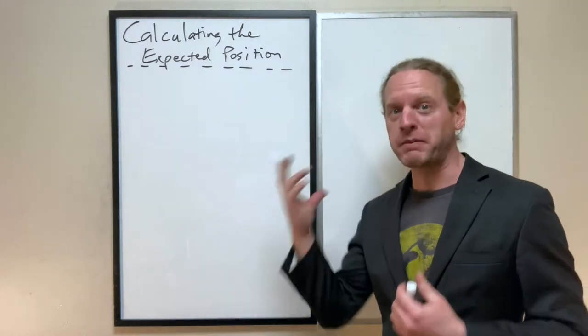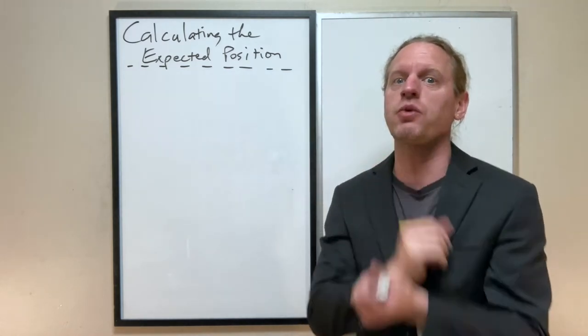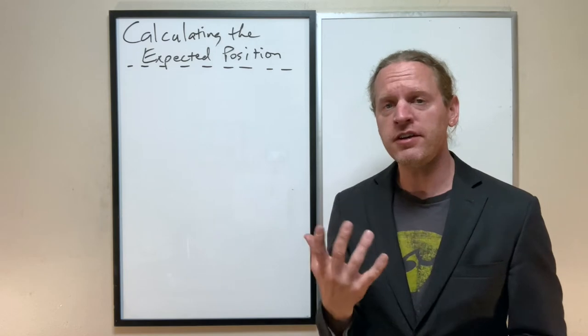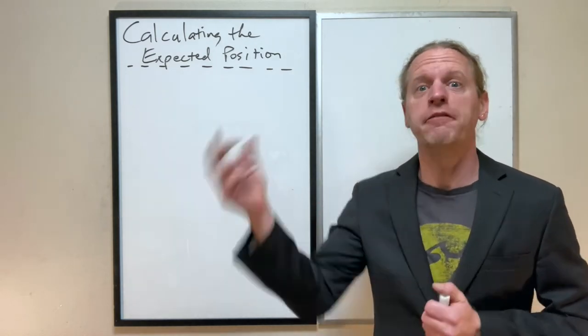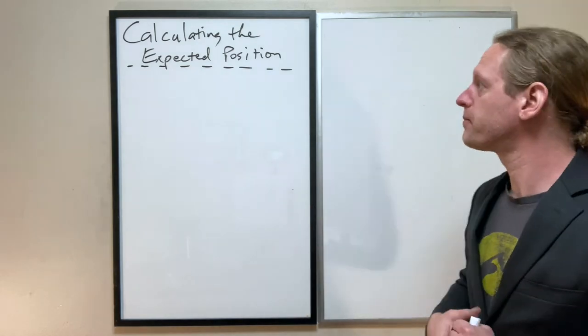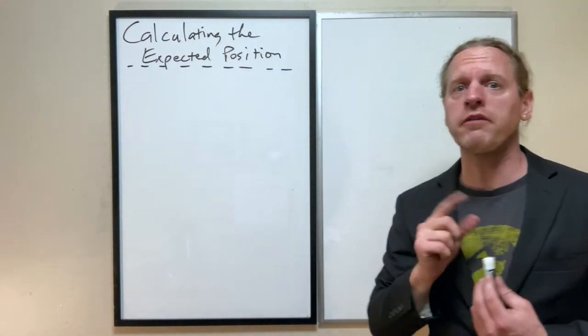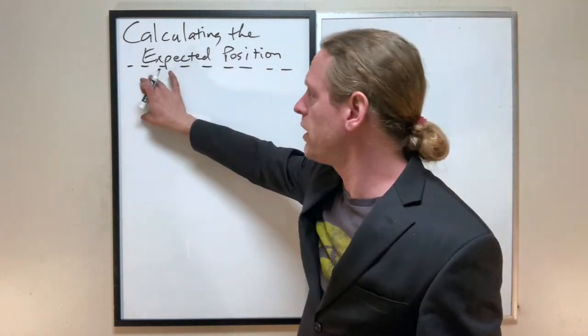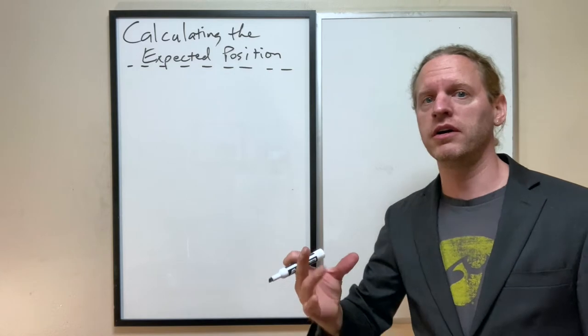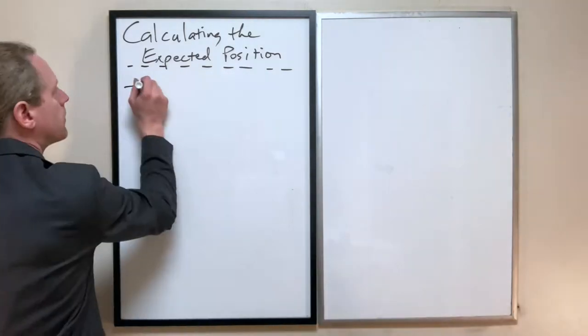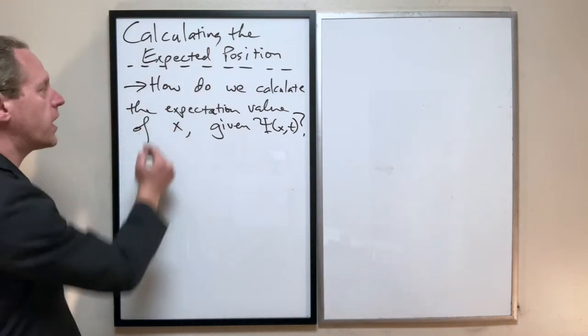And let's take our probability distribution now, which we now understand to be psi squared. And let's consider what is the most likely position for a particle if we know that thing, psi. And by expected position, I want to very clearly say, we're going to try to calculate what the expectation value of a function is.